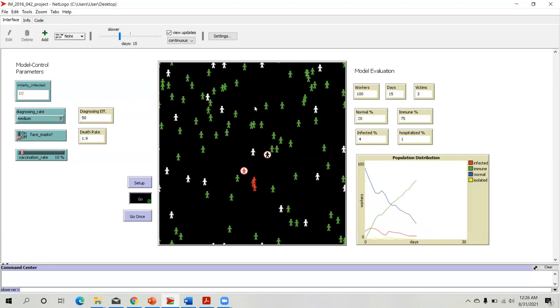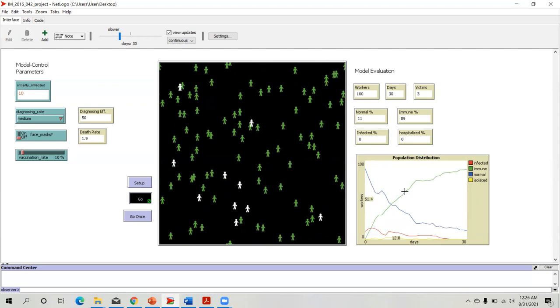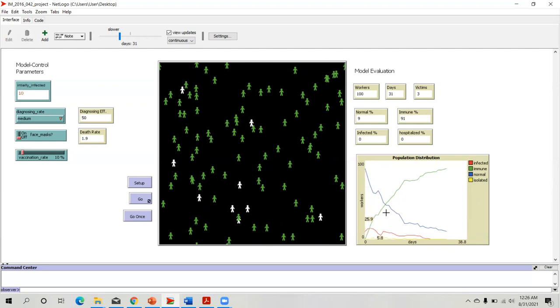You can see in the graph how the immune percentage varies. Within 31 days, the system came into normality. How the immune percentage went up and how the normal people went down because the immune people increased, how the infected people varied for the 31 days, and how the isolated people varied. Isolated means the cases who are hospitalized.